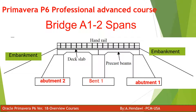In the last lectures we talked about developing WBS. If you have a simple two-span bridge, you have abutment one, vent one, and abutment two. Under abutment one you will have the footing, the piles, then the column, then the superstructures — precast beam or cast-in-situ beam — and you have the slab, the finishing handrail, and on the right and left side you will have the embankment.